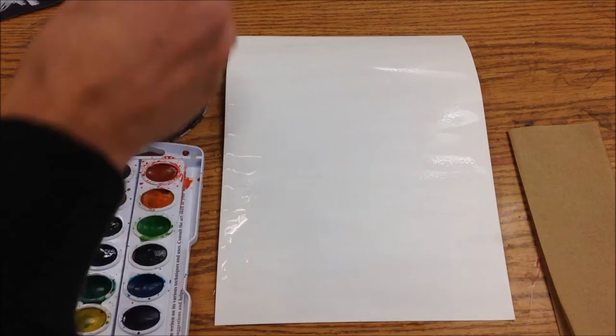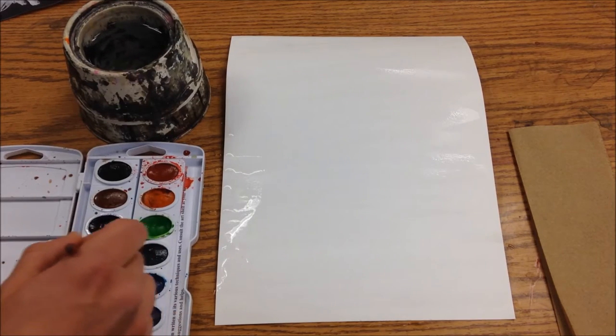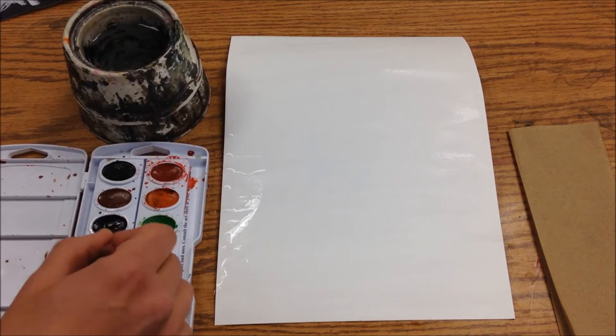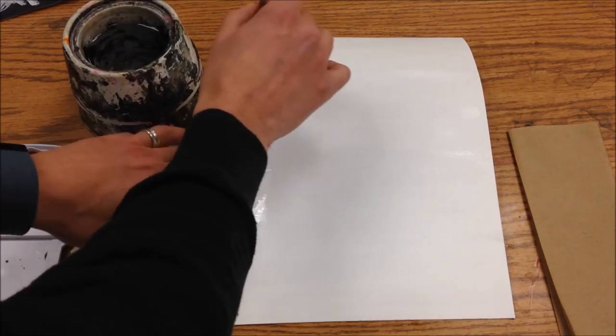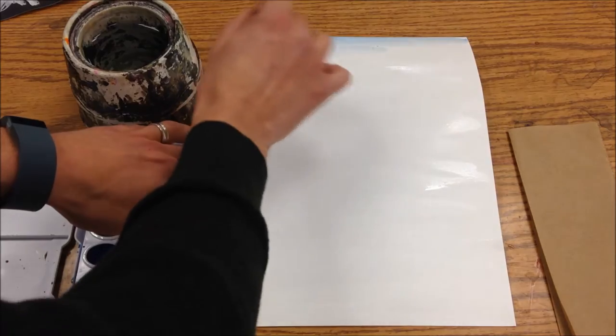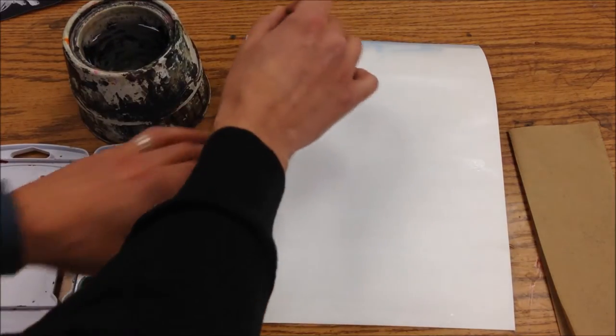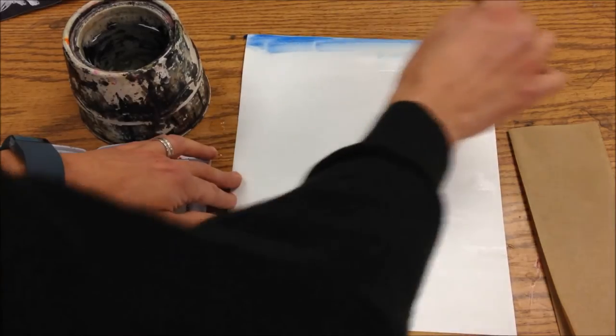So what I'm going to do is I'm going to start by taking some of this blue here, adding water or two, of course, and just gently putting it across the top of my paper and the paper is going to curl a little bit. I'm going to put most of my pigment up there.